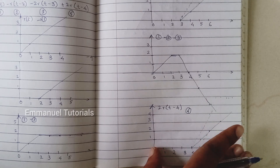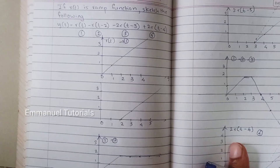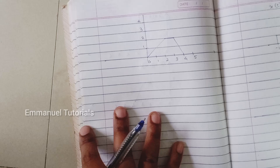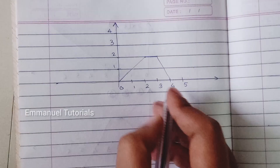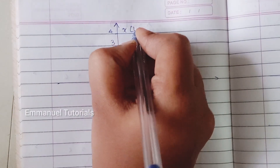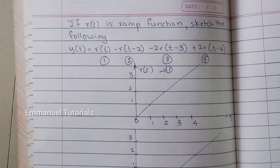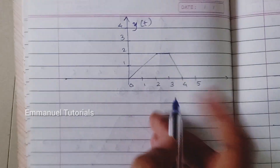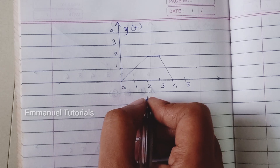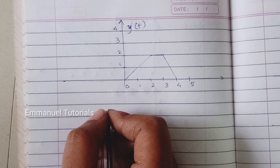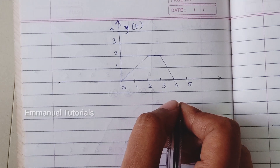This is our final resultant signal — x(t) or y(t) — which is the addition and subtraction of ramps. I hope you understood this. If you have any doubts related to this video or any other concept in signals and systems, electronics, or computer science engineering, please let us know in the comments. Do share this video with friends in need, and like, share, and subscribe to Manual Tutorials for more. Thank you for watching.